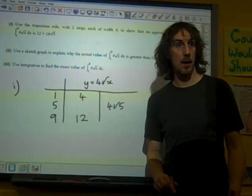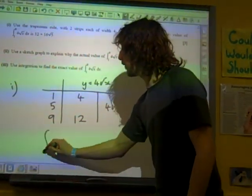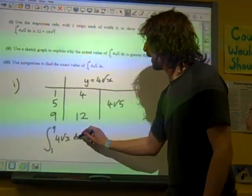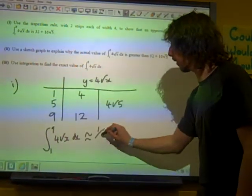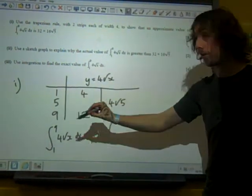And we put it together. If we need to, we refer to the formula that's in the formula sheet that says that the integral between one and nine of four root x dx is approximately equal to a half times the width of each of these strips, which is four.